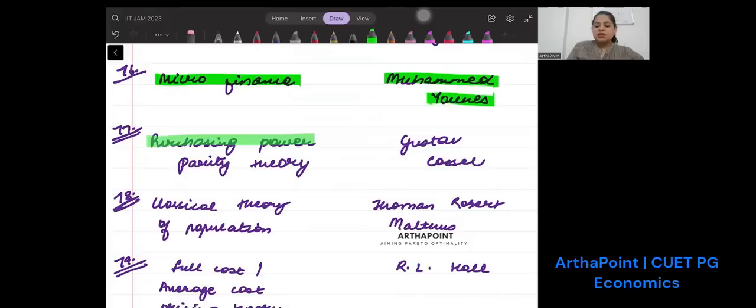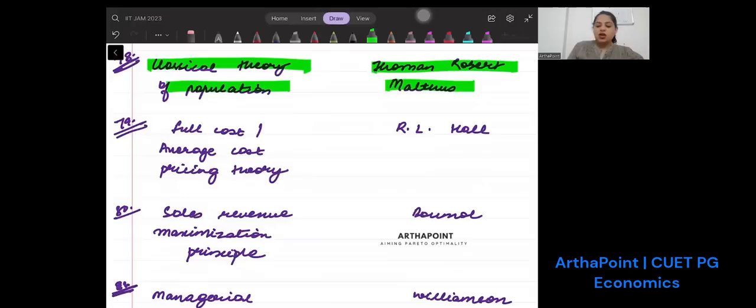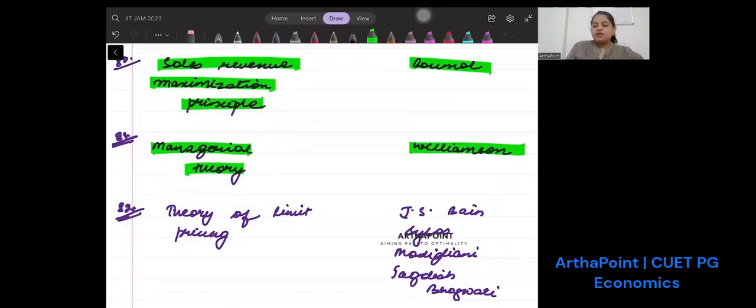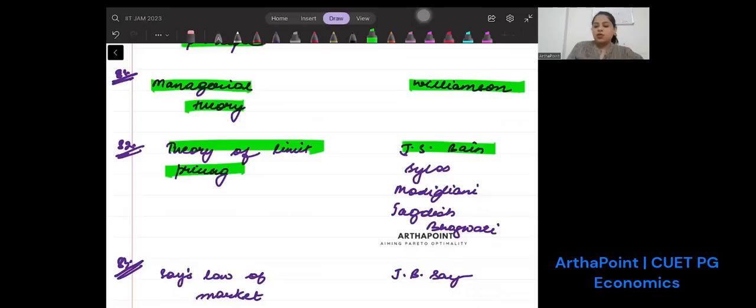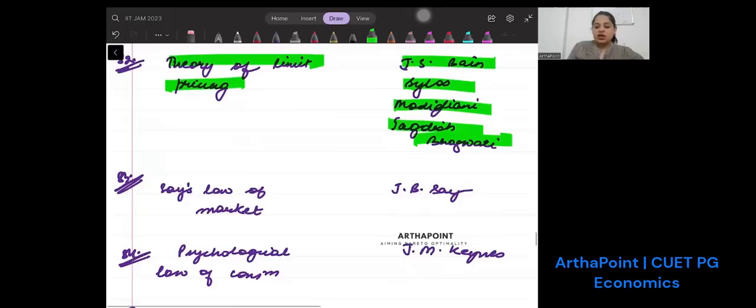This is important: microfinance is given by Muhammad Yunus. Purchasing power parity theory is given by Gustav Cassel. Classical theory of population is given by Thomas Robert Malthus. Full cost or average cost pricing theory is given by R.L. Hall. Sales revenue maximization principle is given by Baumol. Managerial theory is given by Williamson. Theory of limit pricing is given by J.S. Bain, Modigliani, Jagdish Bhagwati, and Sylos-Labini.